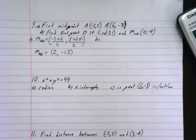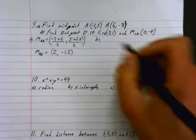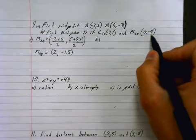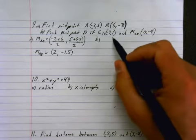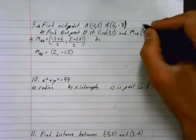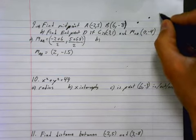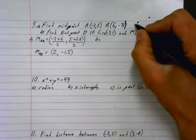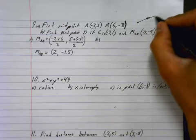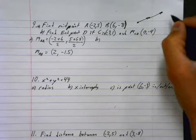Now, part B is find the end point. Find end point D if C is that and midpoint CD is that. Okay, so basically what's going on here is... Well, let's draw a little picture up here. So if I have one point and then I've got a midpoint and then I've got another point, it's got to be somewhere over here.